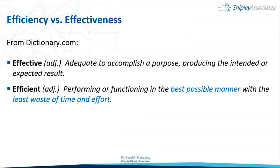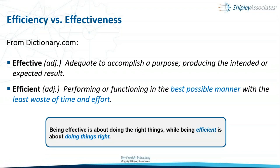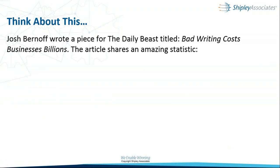We always kind of turn to a definition. What is efficiency compared to effectiveness? We use these words interchangeably, but they're not really interchangeable. Being effective means adequate to accomplish a purpose — producing the intended or expected results. Being efficient, on the other hand, is performing or functioning in the best possible manner, with the least waste of time and effort. Being effective is about doing the right things, while being efficient is about doing things right.